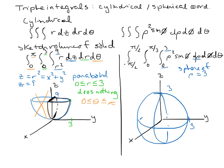The next part inward is phi, which goes from 0 to pi over 3. Zero is on the positive Z axis, and phi moves downward toward the XY plane. It stops at an angle of pi over 3, which essentially cuts off the entire lower part of the sphere — the whole lower part is gone.